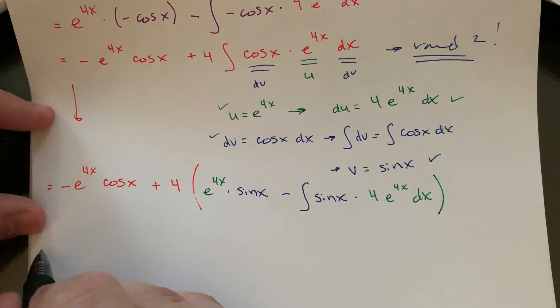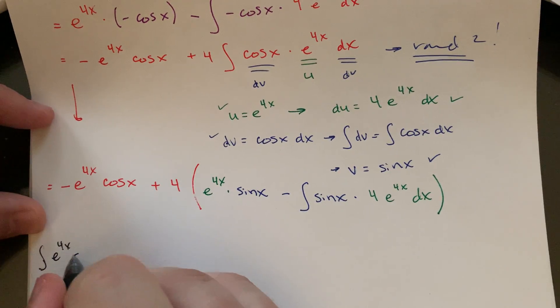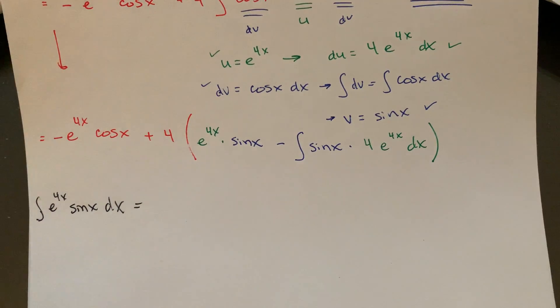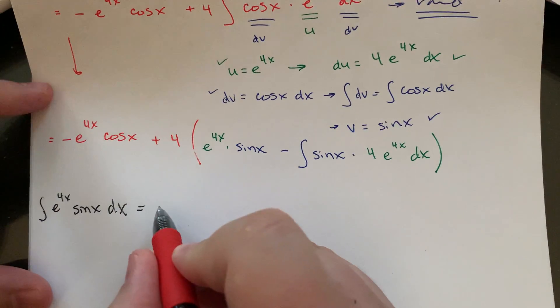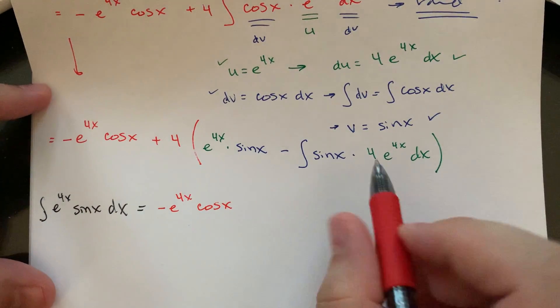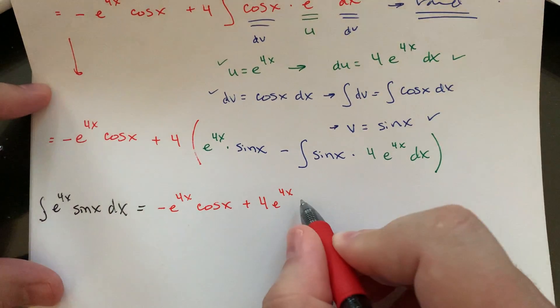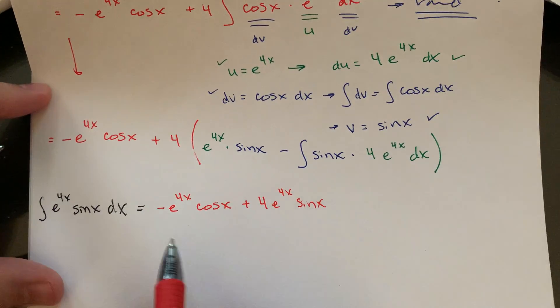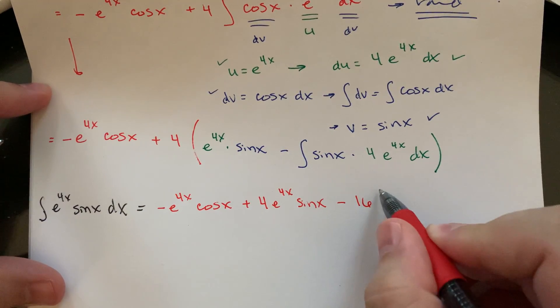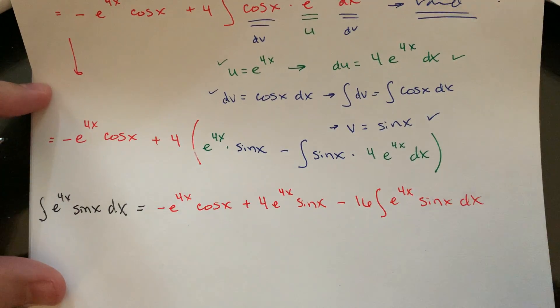So recall, the original version, our integral here, e to the 4x sine x dx, that's where we started. So then that should be equal to, so this is minus e to the 4x times cosine x. Distribution here, we'll clean this up, so plus 4 e to the 4x sine x, minus 4 times 4, so that'll actually be minus a 16 integral of e to the 4x sine x dx.